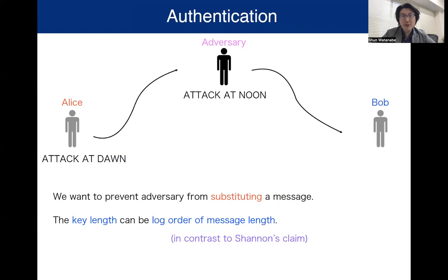Another important problem in cryptography is the problem of authentication. In this figure, the sender Alice wants to transmit a message 'attack at dawn,' but an adversary tries to substitute this message with 'attack at noon.' In the authentication problem, we want to prevent the adversary from substituting a message. We can show that the key lengths needed for authentication can be of logarithmic order of the message lengths. This is in contrast to Shannon's claim saying that the key lengths must be as large as the message lengths. So from the viewpoint of key consumption, authentication is a somewhat easier problem than encryption.